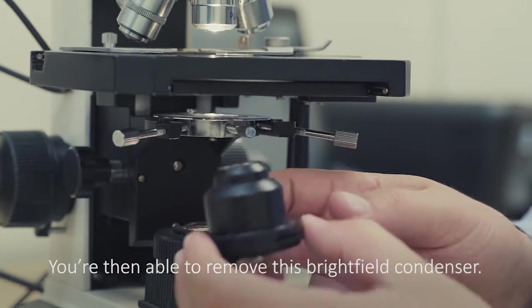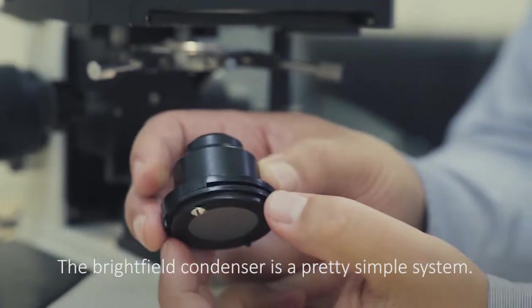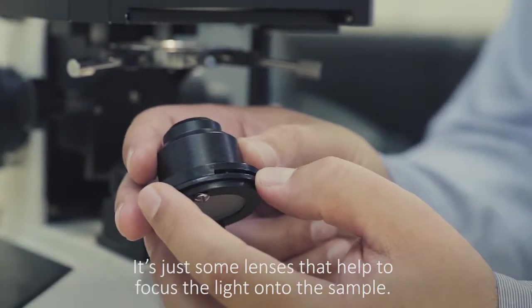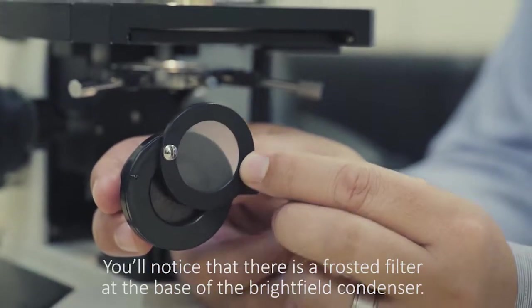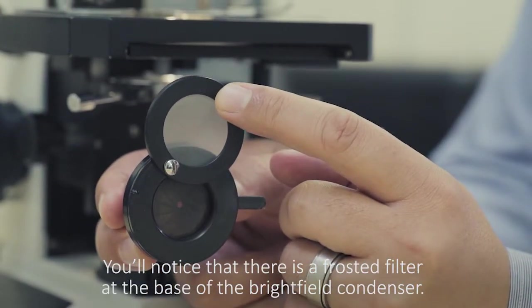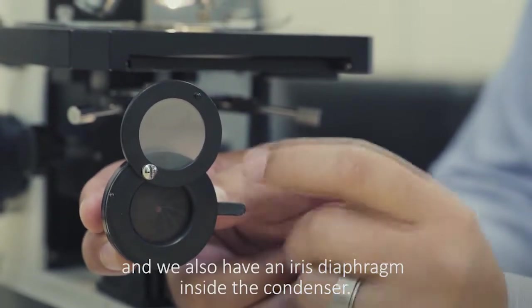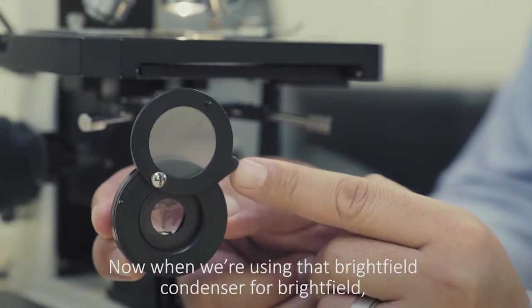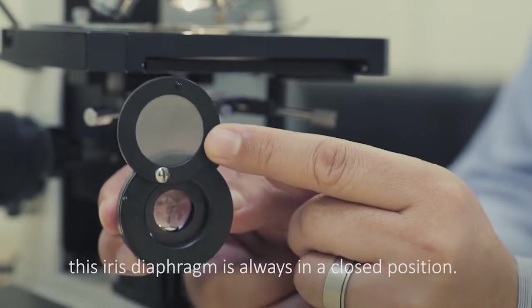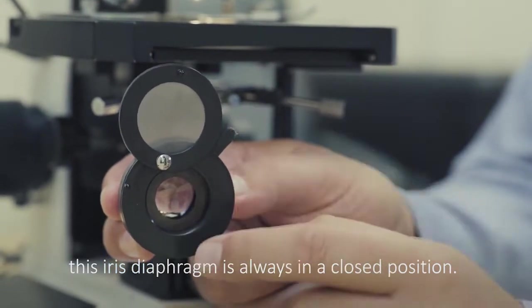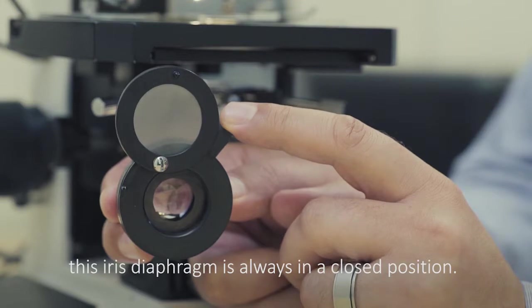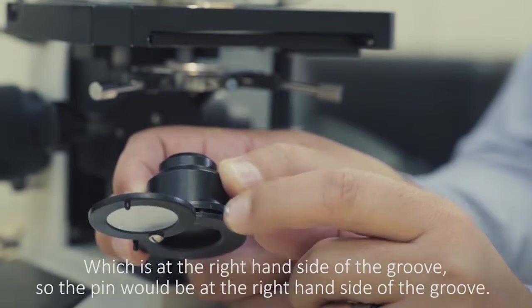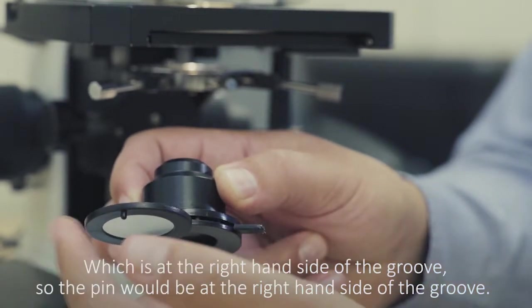The brightfield condenser is a pretty simple system. It's just some lenses that help to focus the light onto the sample. You'll notice that there is a frosted filter at the base of the brightfield condenser and we also have an iris diaphragm inside the condenser. When we're using the brightfield condenser for brightfield, this iris diaphragm is always in a closed position, which is at the right hand side of the groove. So the pin would be at the right hand side of the groove. Frosted filter would of course be in place under the condenser.